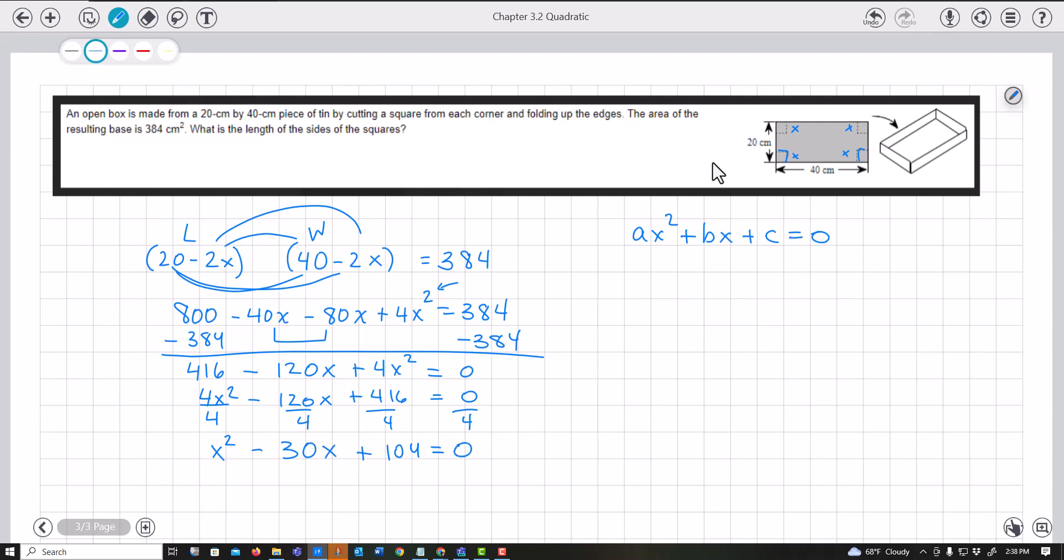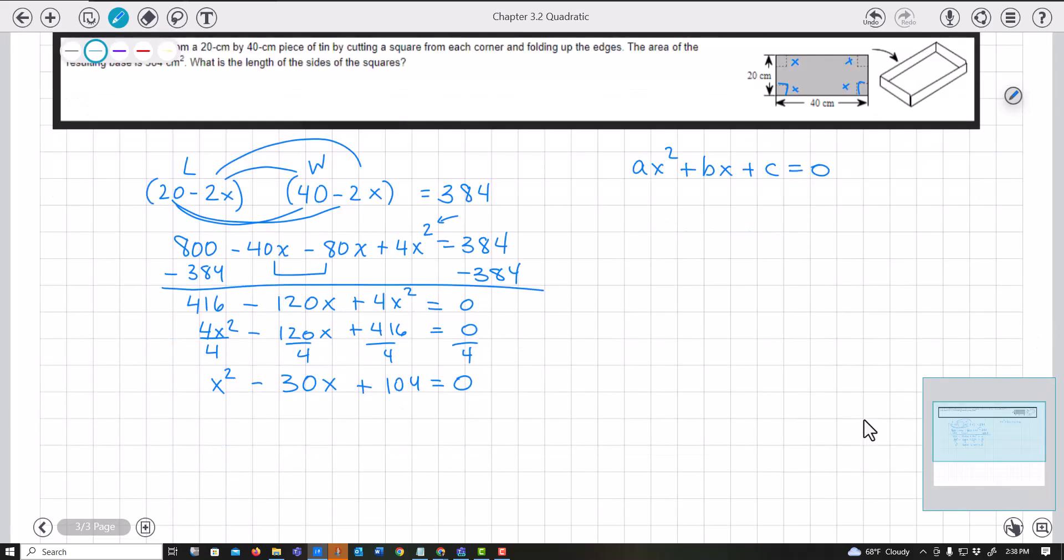This is what I'm trying to factor. I pick up a calculator because I know X² is X times X. The middle term is negative and the constant is positive, so both factors must be negative to get a negative middle term and positive product of 104.